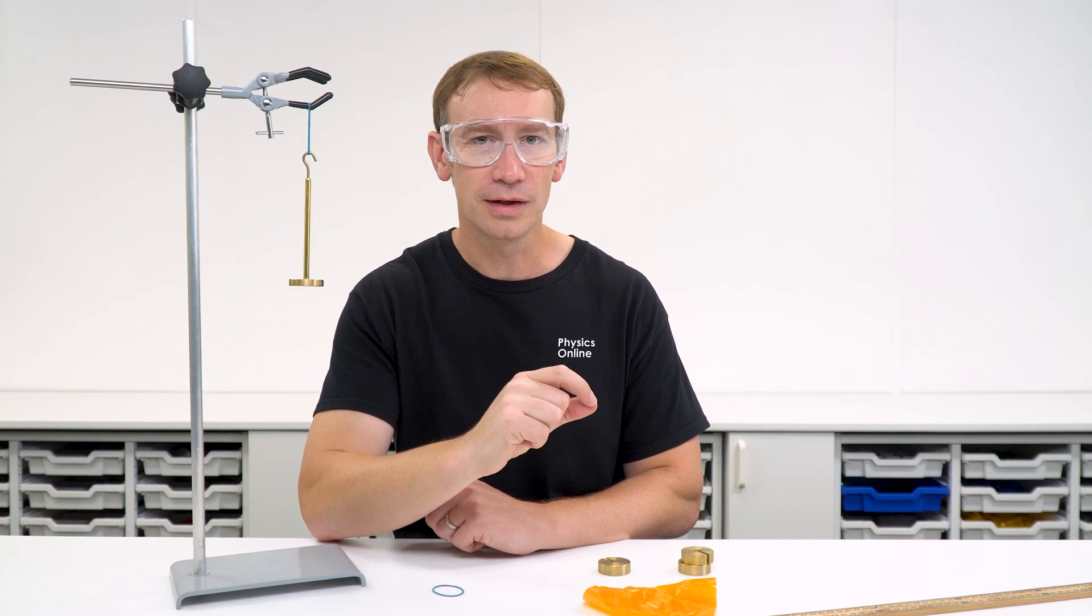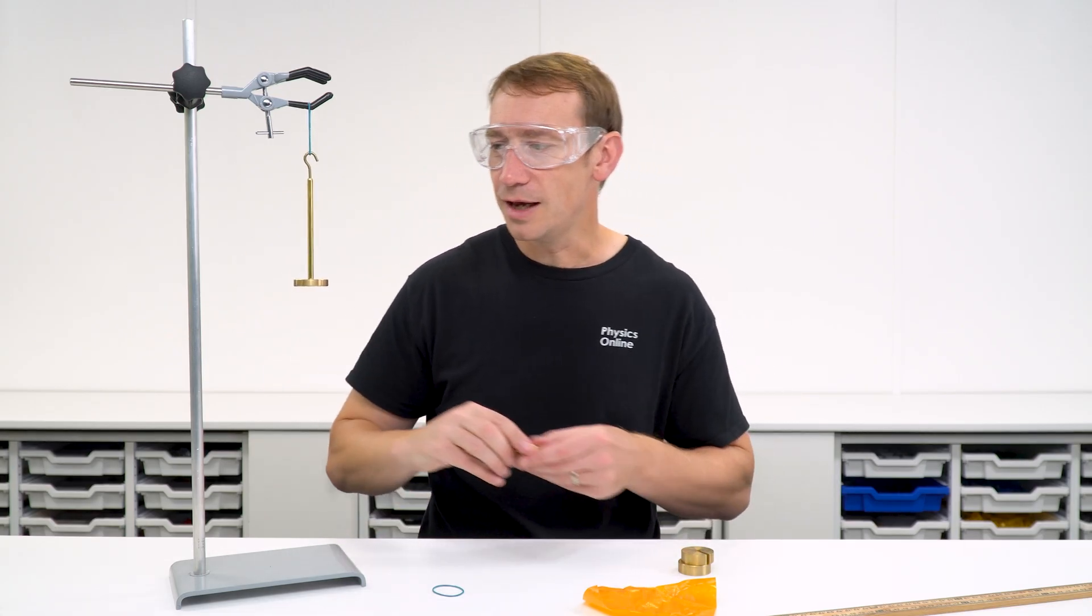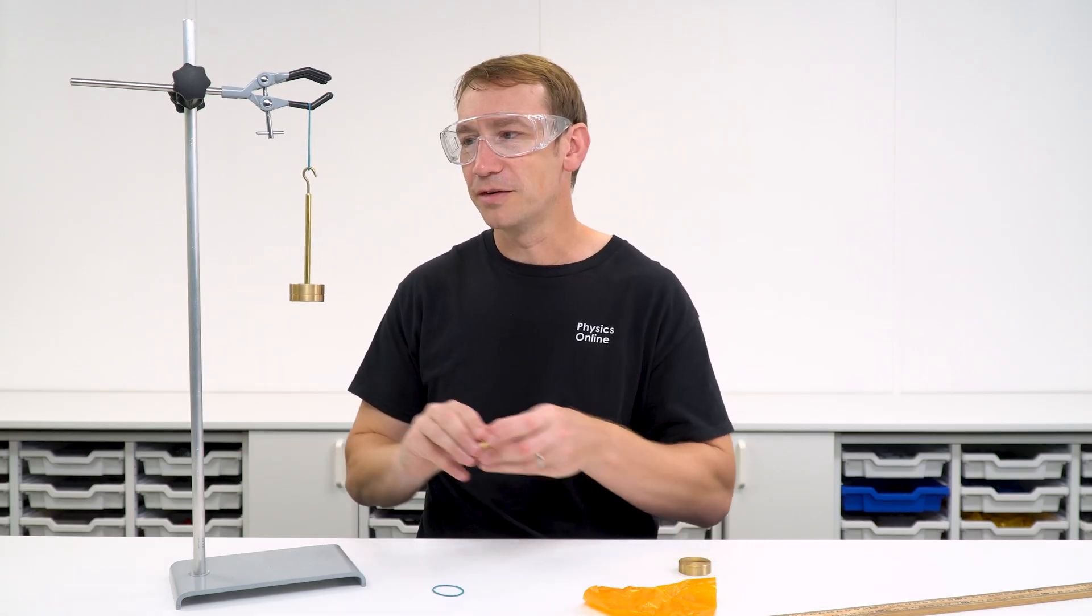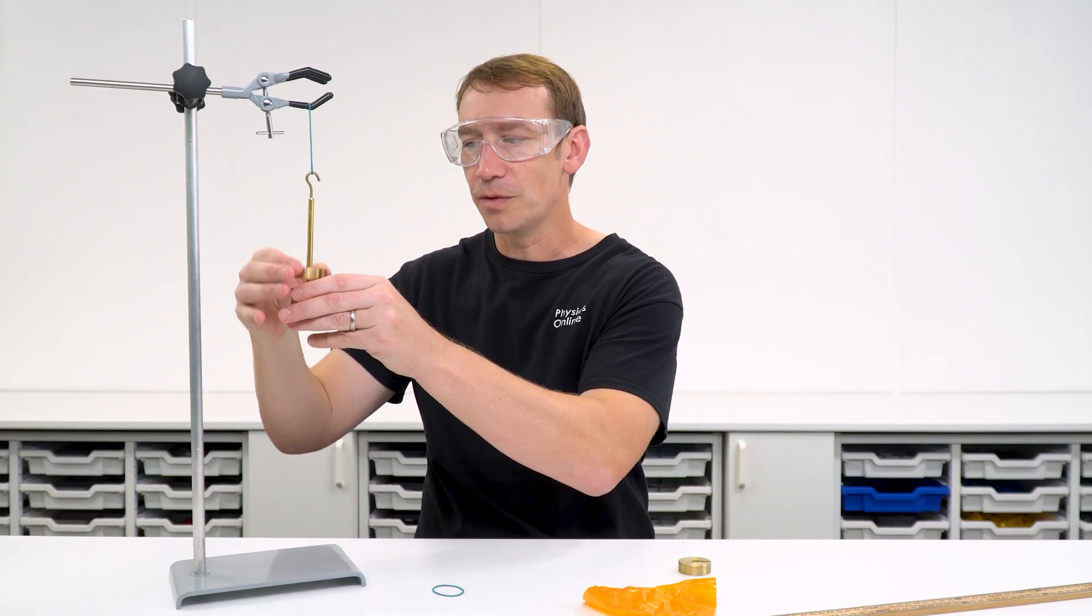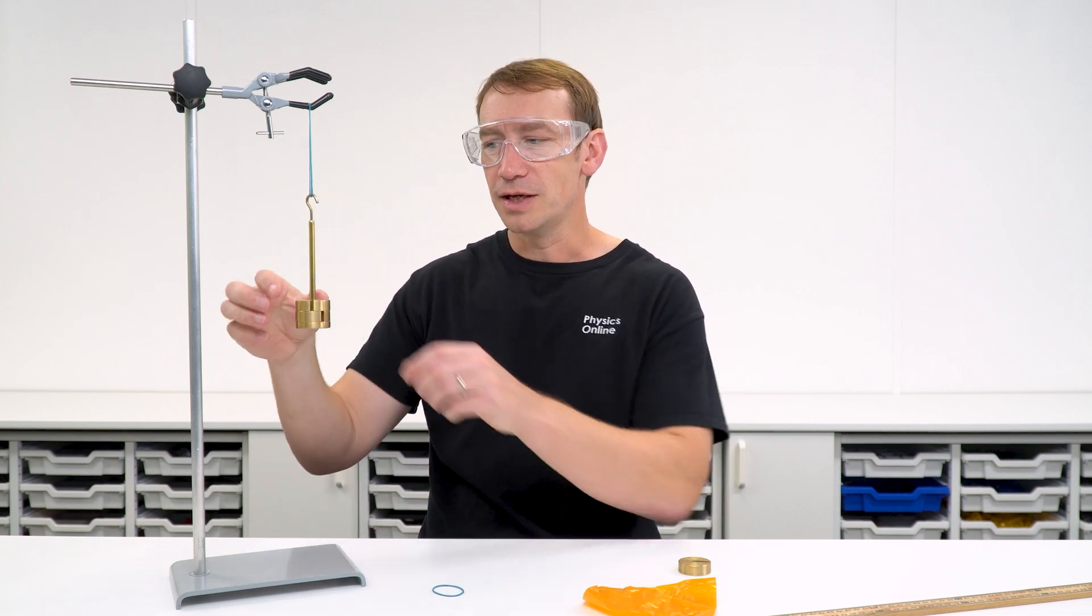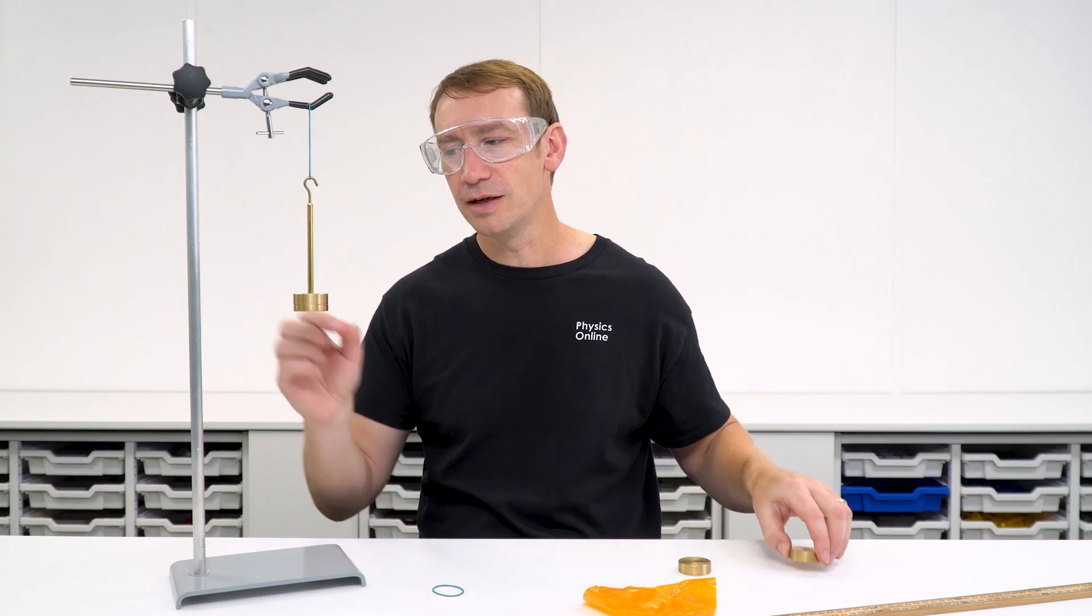We can take off the original length to find out the extension of that material. And the key thing here is that as you're loading it up with masses we can work out the weight which tells us the force being applied. But as you start to unload it, you might notice that your values for the extension are slightly different.